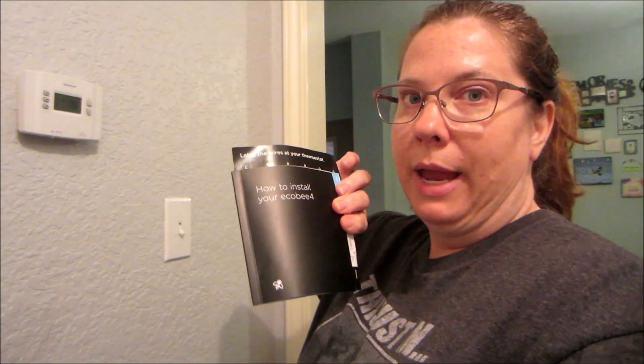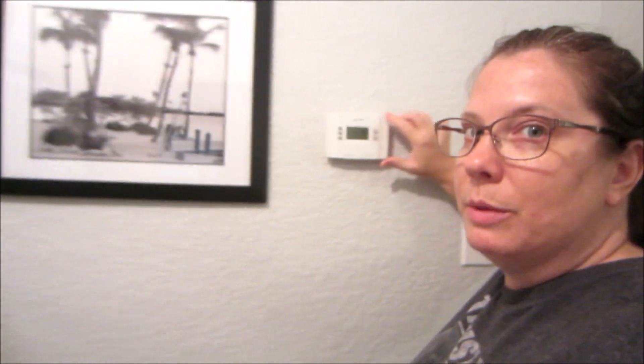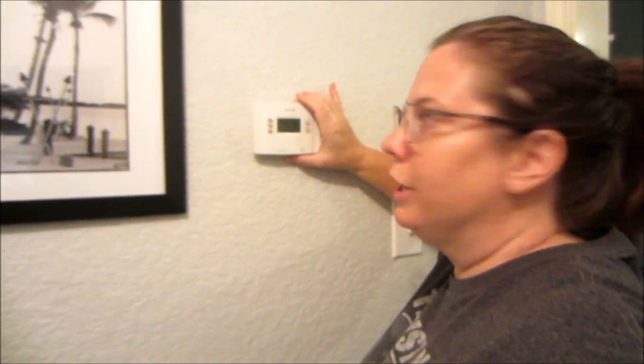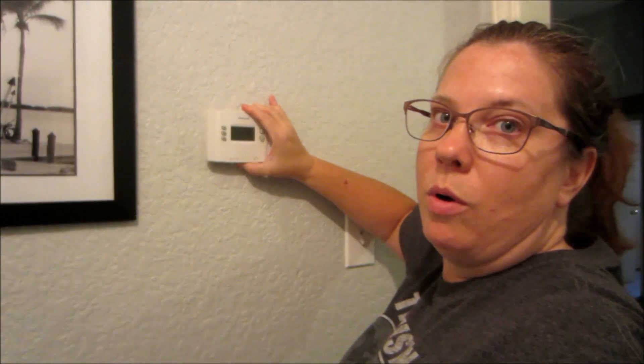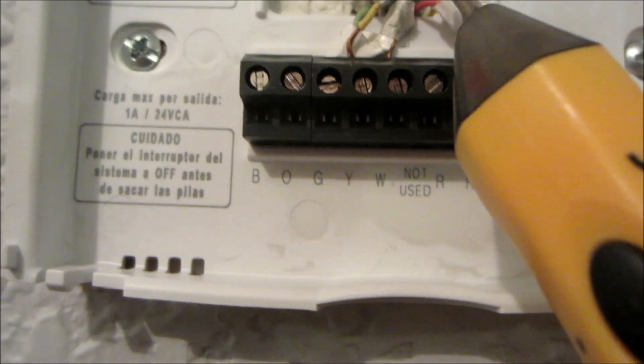This does come with a booklet and it tells you step-by-step what to do, which is great. It includes these stickers so you can label the wires that are in the unit, both upstairs in the furnace or wherever your furnace is and in here. This is the thermostat I previously installed probably a couple of years ago, but you just pull it off the wall. It's battery operated, so there are numbers on there but that's mainly battery. But I have four wires: one, two, three, four.